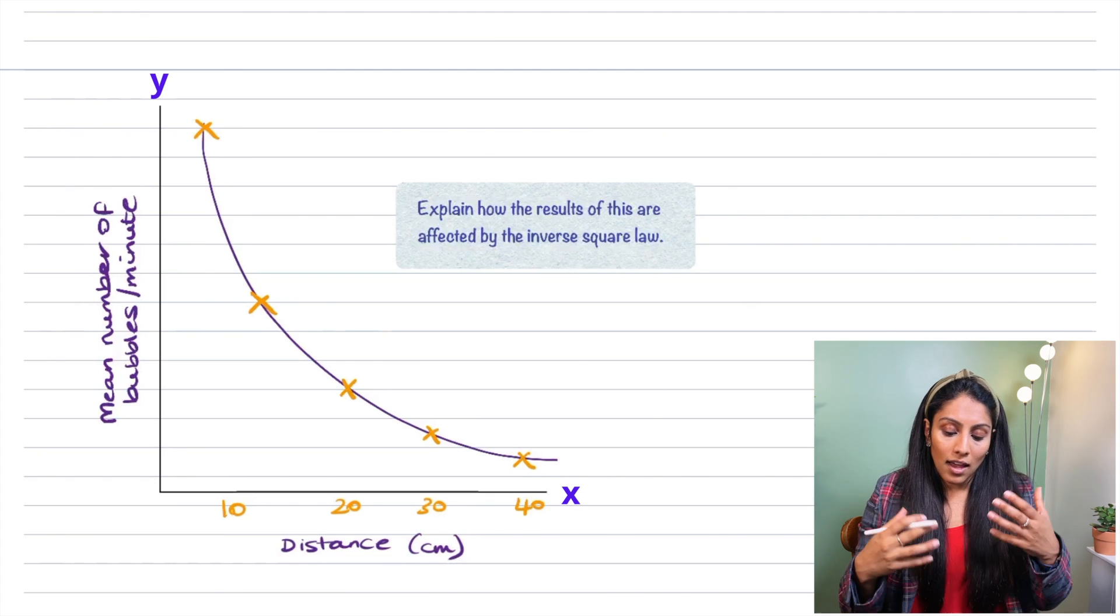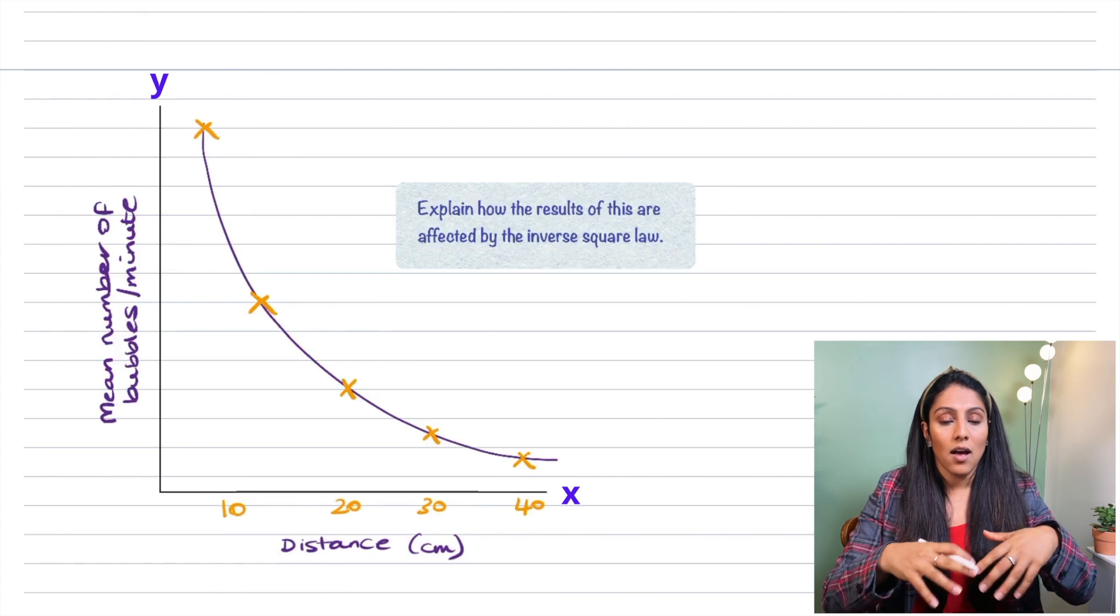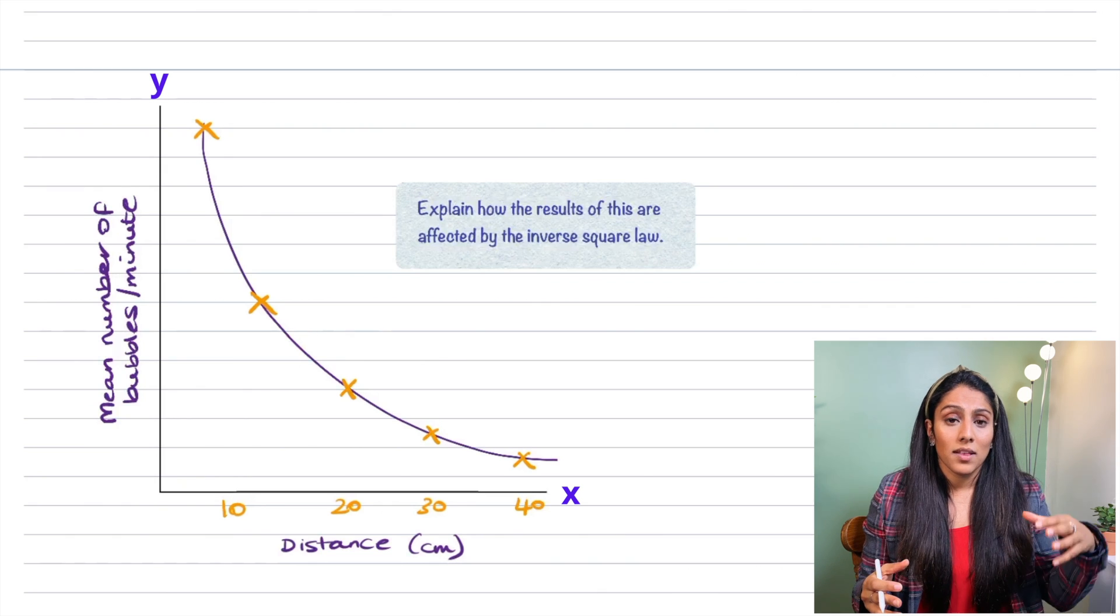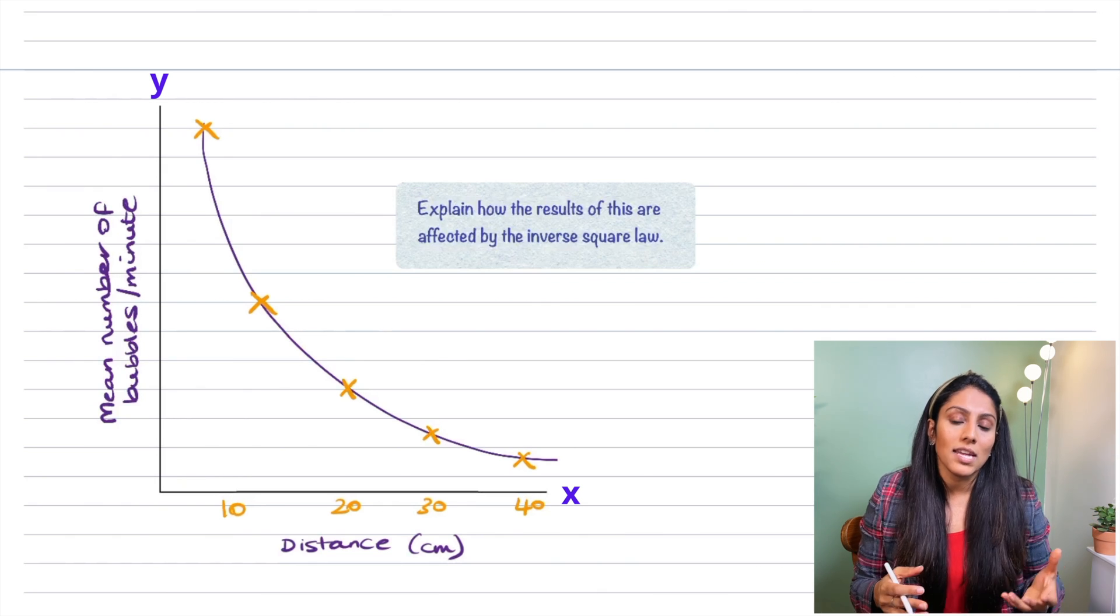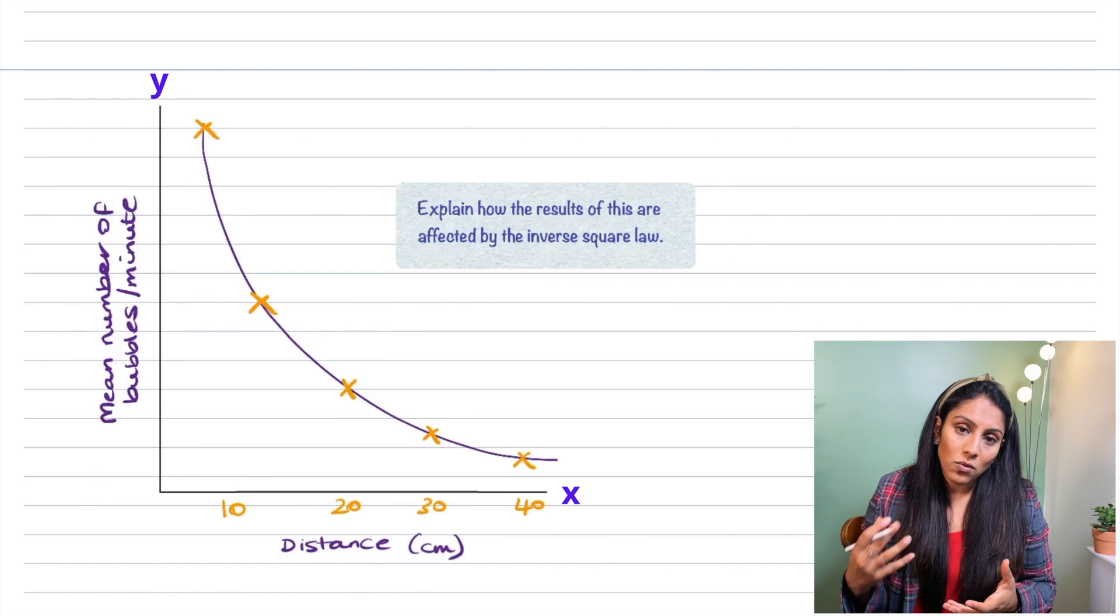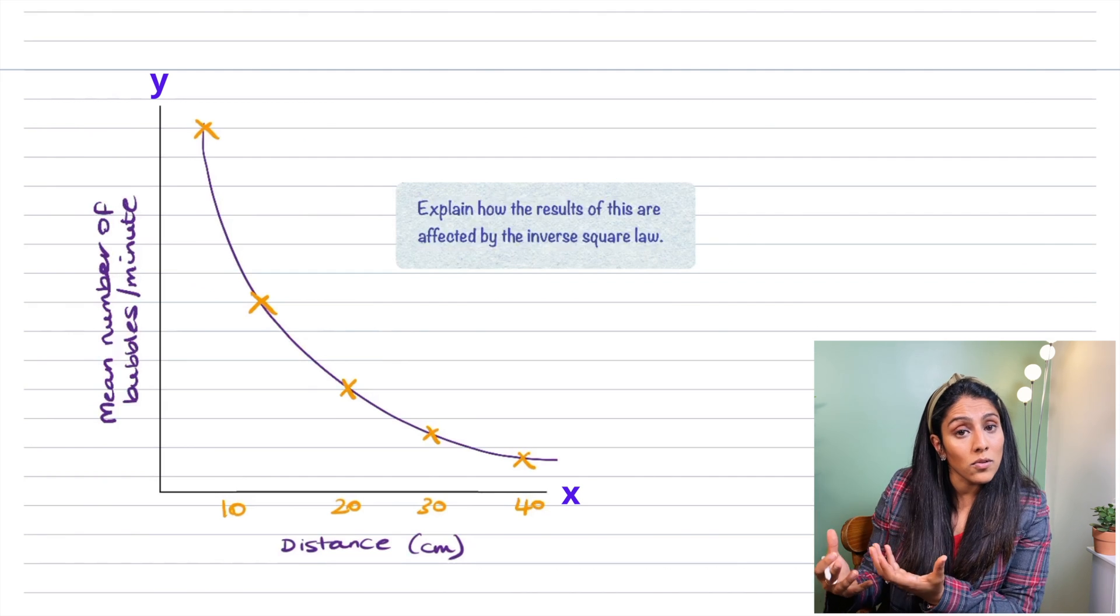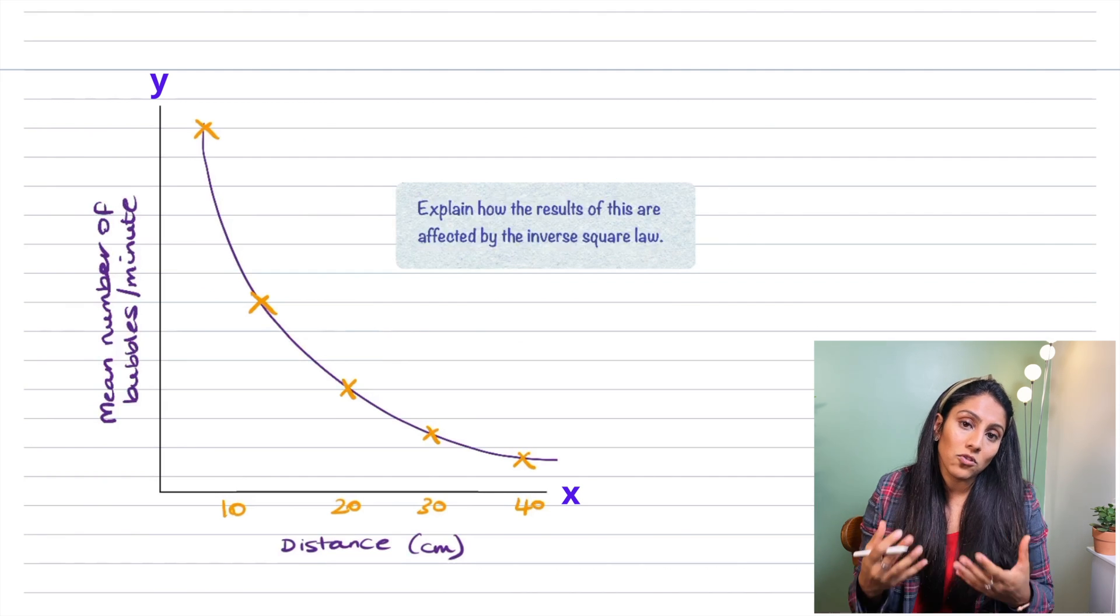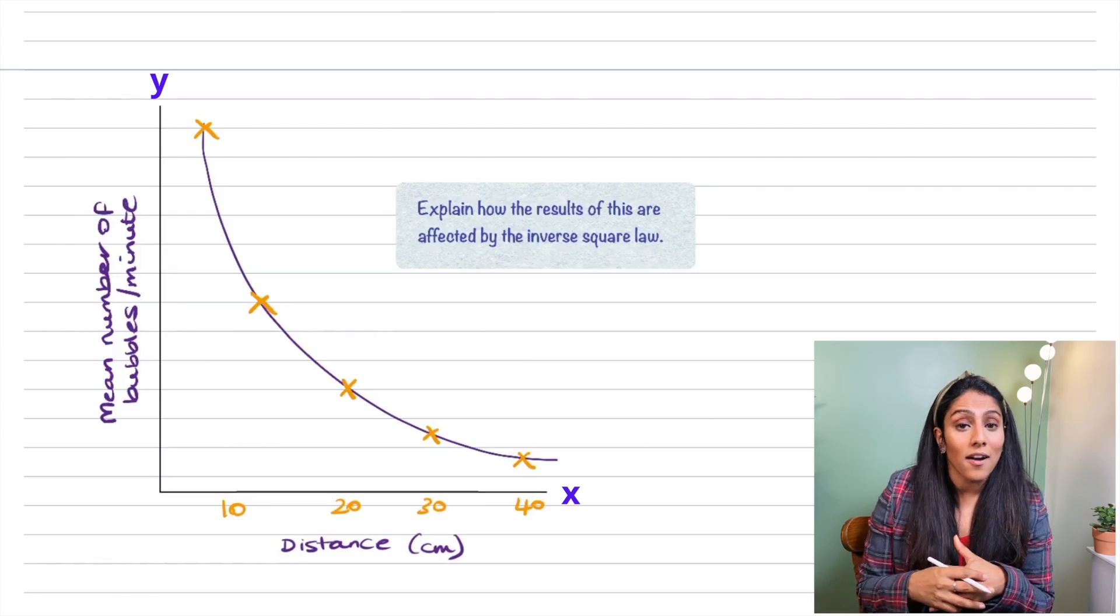So what does that mean? The inverse square law means that when you double the distance the rate of photosynthesis also decreases by four times which also means that the number of bubbles or volume of oxygen that is produced will also decrease by four times.